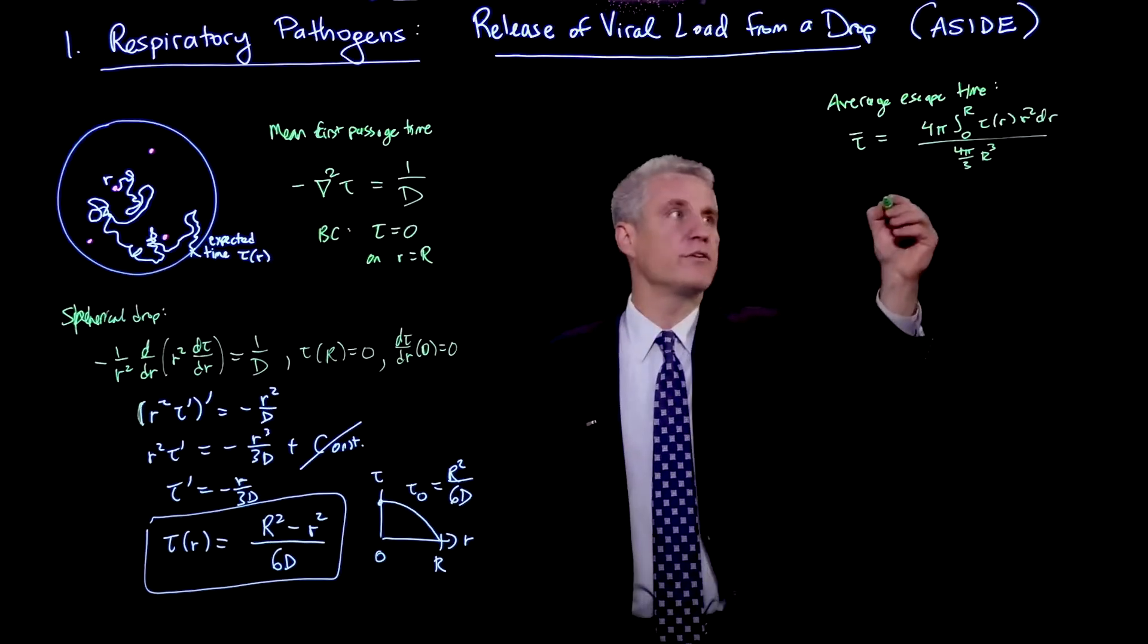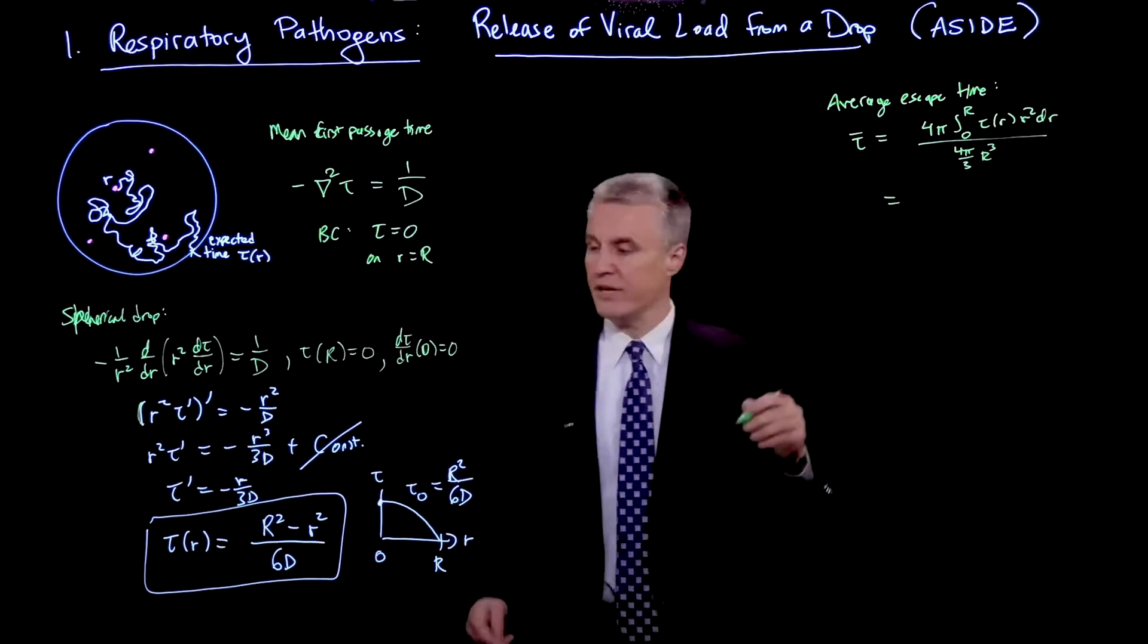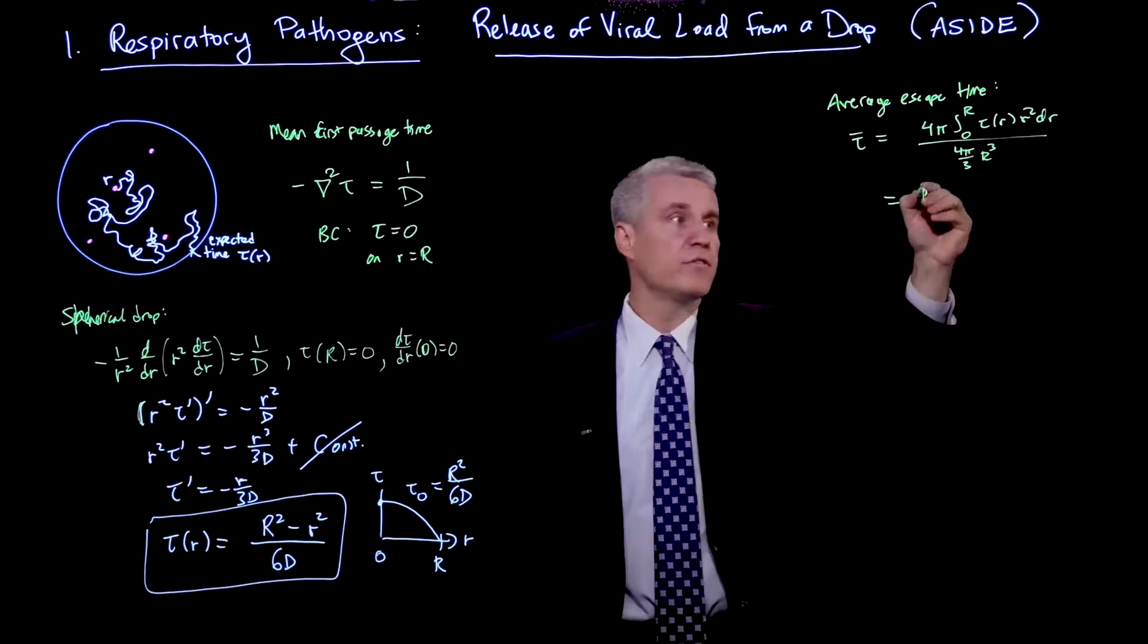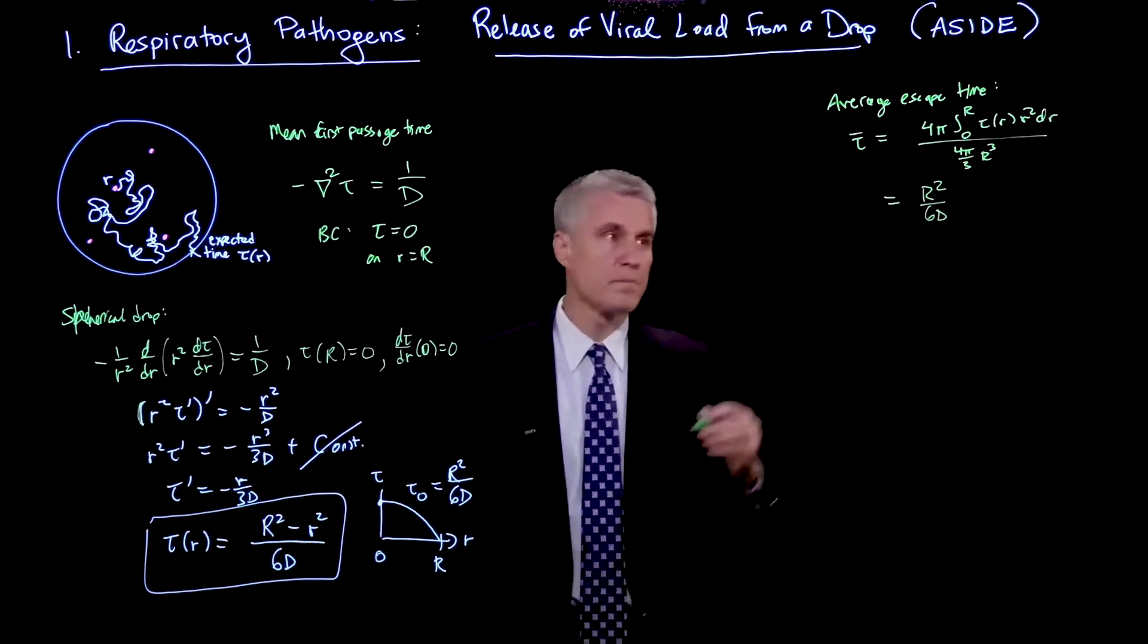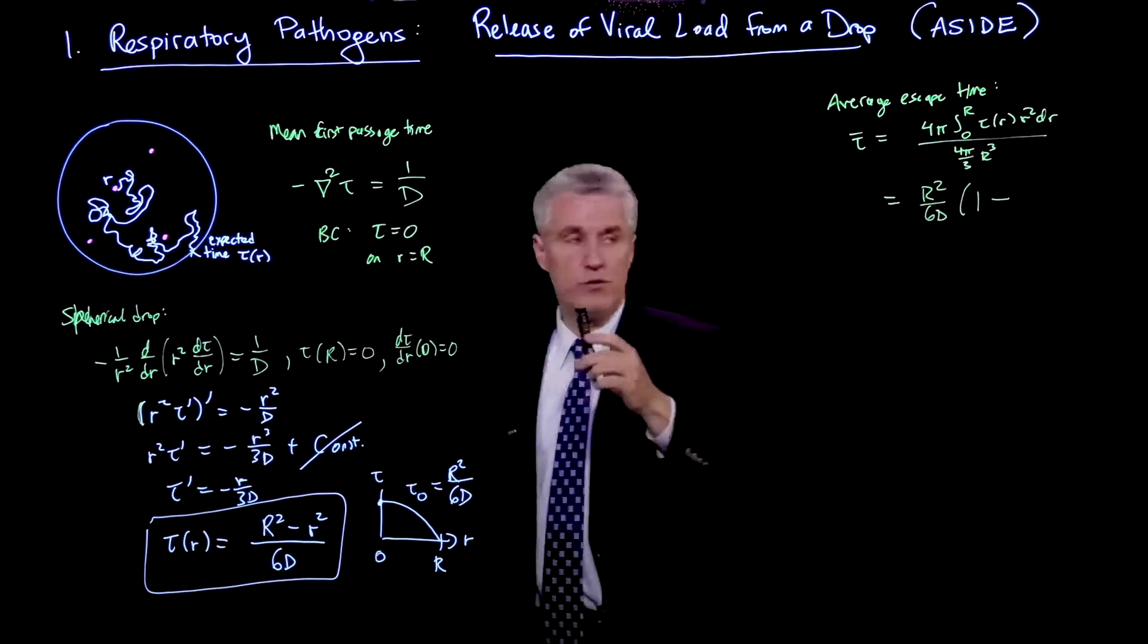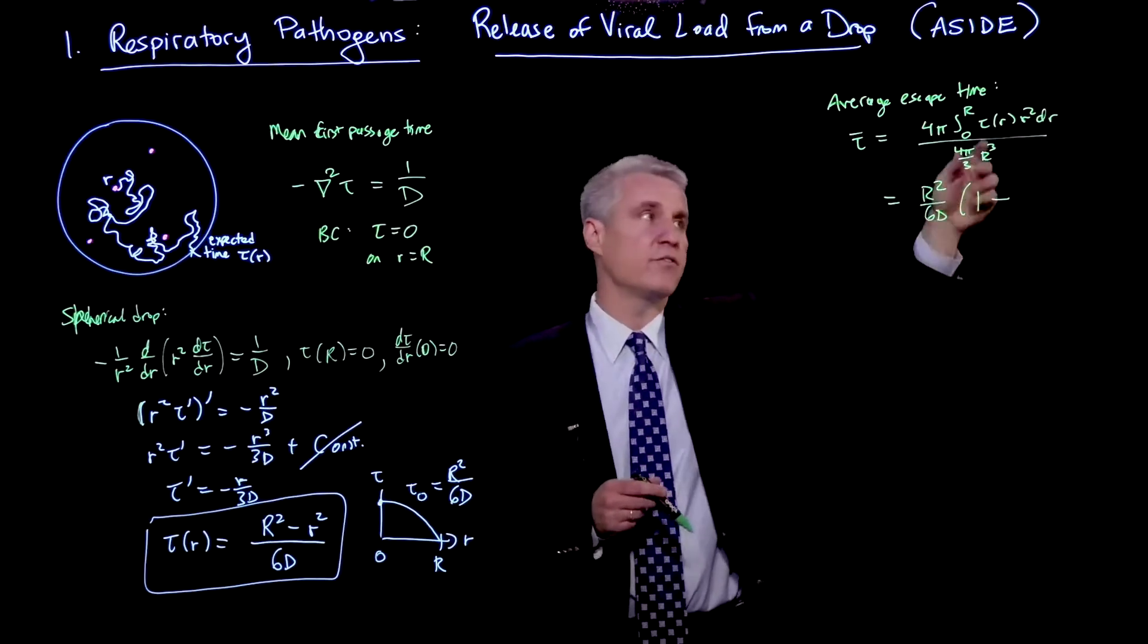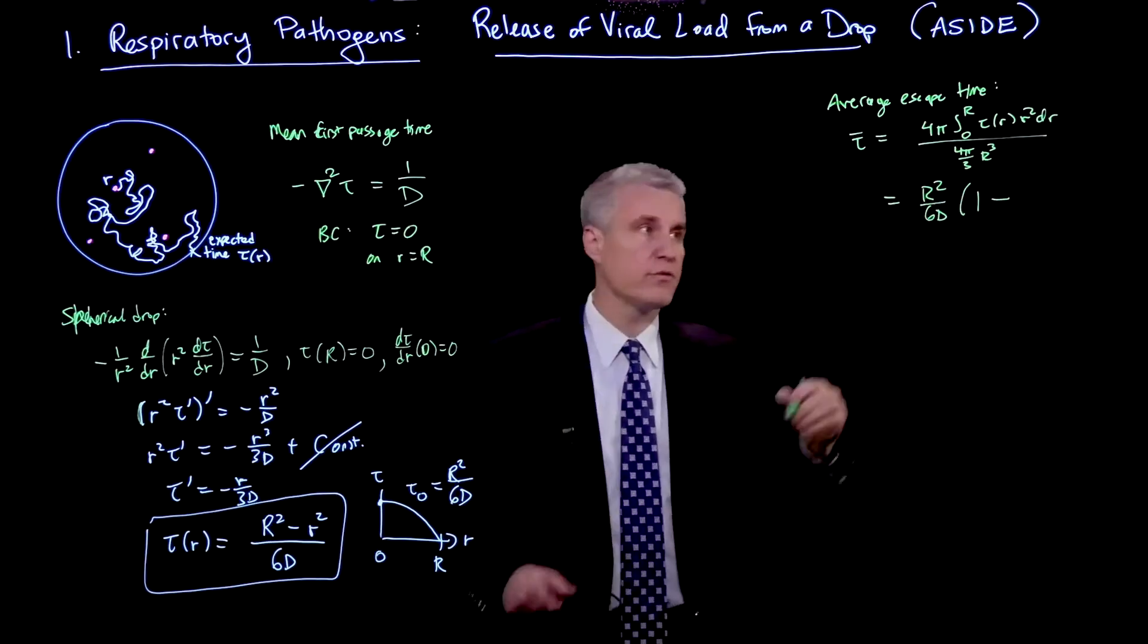So if we do this integral here, we plug in this. First of all, we can see that we get, obviously, for the constant term, r squared over 6d, we just have a ratio of volume over volume, which is 1. So we get r squared over 6d is the first term, just integrating that constant. But then it's 1 minus. And then instead of r squared, you would have r squared times this r squared, so that's r to the fourth. So you integrate that, you get r to the fifth over 5. And so then you get 1 fifth over this 1 third here. And that gives you 3 fifths.